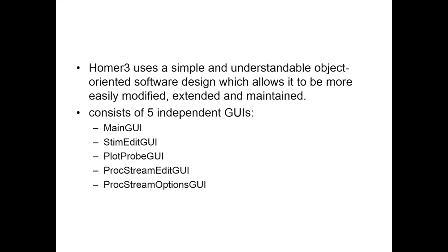Homer3 uses a simple, understandable object-oriented software design, making it easier to modify and extend. It consists of five independent GUIs, the same as Homer2: the main GUI, the stim edit GUI where you can add or label stimulus marks, the plot probe display GUI showing hemodynamic response on all channels simultaneously, the proc stream edit GUI where you add or remove processing functions, and the proc stream options GUI where you input parameters for chosen functions.